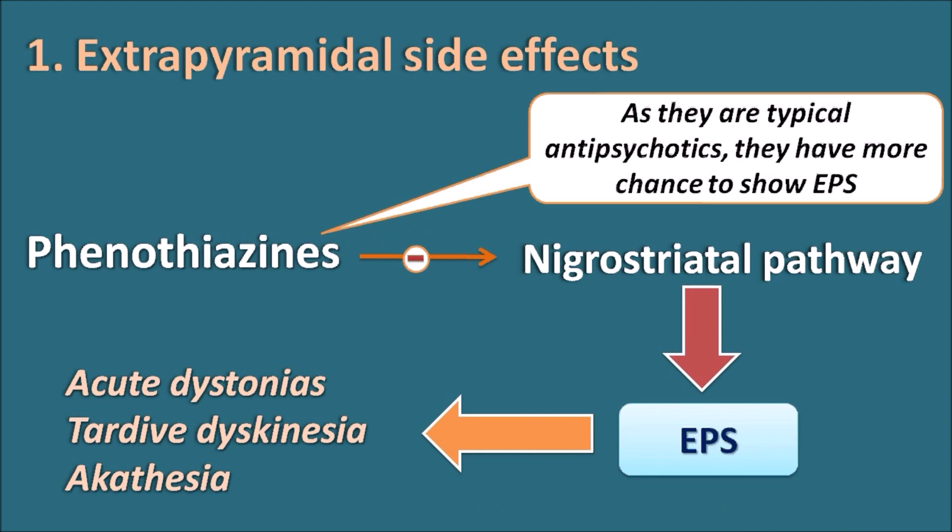As phenothiazines are typical antipsychotics mainly acting on D2 receptors, they have more chance to produce extrapyramidal side effects compared with the atypical antipsychotics.